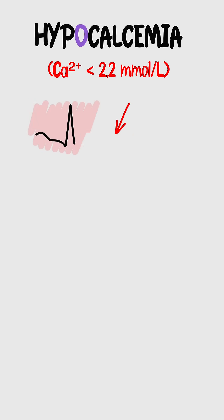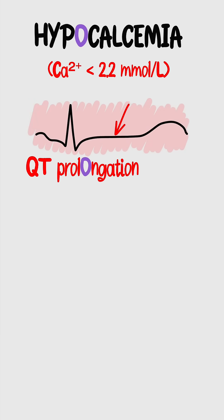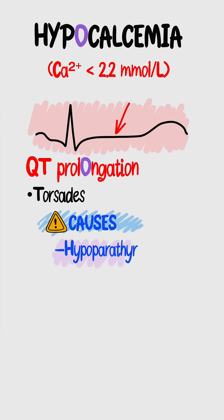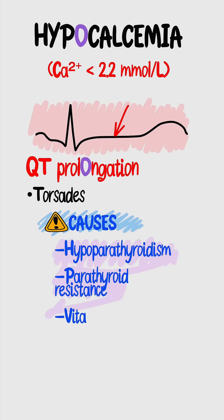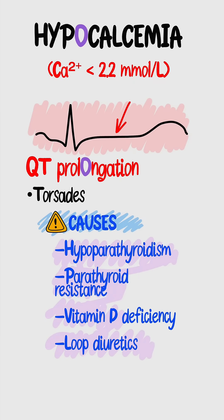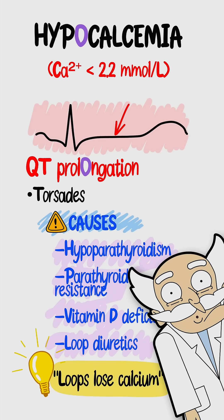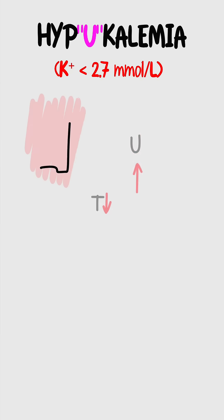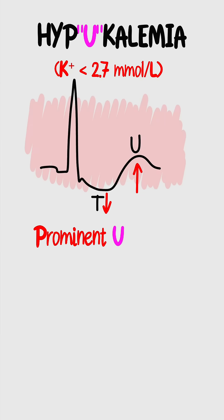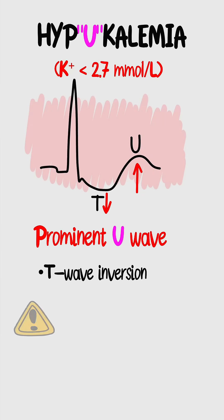Not enough calcium — QT gets long. That invites torsades. Causes to remember: hypoparathyroidism, parathyroid resistance, vitamin D deficiency, and loop diuretics. Say it with me: loops lose calcium.